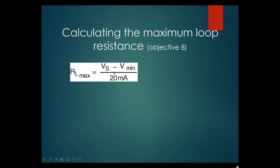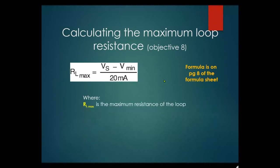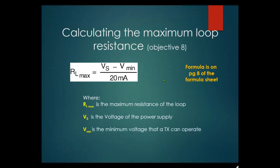The formula is on page 8 of the formula sheet. RL is the maximum loop resistance, VS is the voltage supply, and V-minimum is the minimum voltage at which the transmitter can operate. With 4 to 20mA going through the loop with multiple 250 ohm drops, you need enough voltage to supply the transmitter as well as the loop. If there isn't enough, it will not work — you'll see this demonstrated in one of your labs.